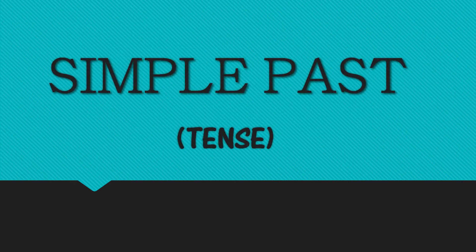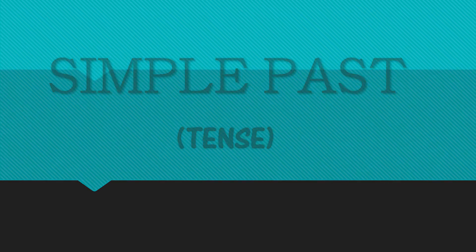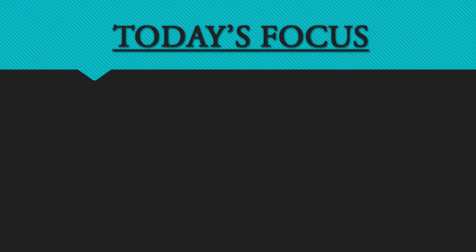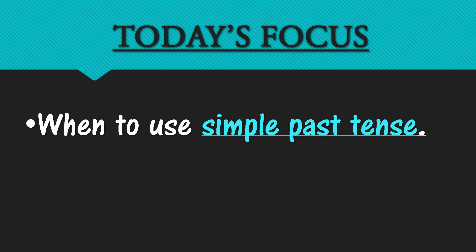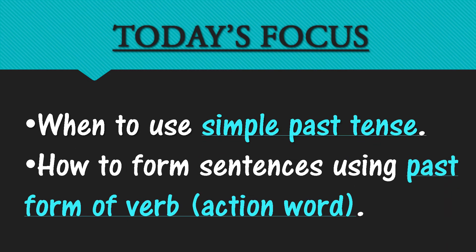Simple past tense is used to describe an action that got over at a definite time in the past. Today we are going to focus on when to use simple past tense and how to form sentences using the past form of a verb. Past form of verb means the past form of action words.